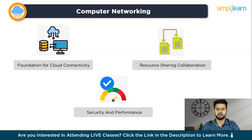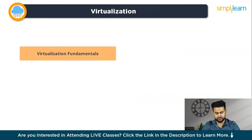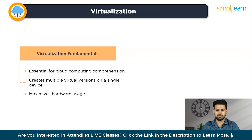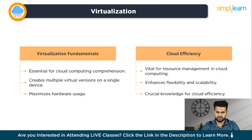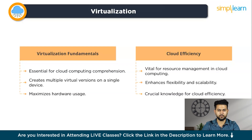Now, let's understand what is the next thing we should focus on if we want to learn cloud computing in 2024. The next thing is virtualization. Learning virtualization is essential because it allows you to create multiple virtual versions of a computer or server on a single physical device. In simpler terms, it helps you make the most out of hardware by dividing it into smaller independent units. Cloud computing relies heavily on virtualization to efficiently manage and allocate resources. By learning virtualization, you gain a foundational understanding of how to optimize hardware usage, improve flexibility, and enhance scalability. This knowledge is crucial in the world of cloud computing where efficiency and resource utilization are key factors.